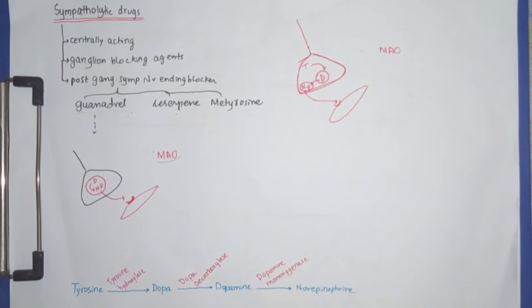The next agent of postganglionic sympathetic nerve ending blockers is reserpine. Reserpine is a drug that inhibits transporters responsible for uptake of monoamines—all of